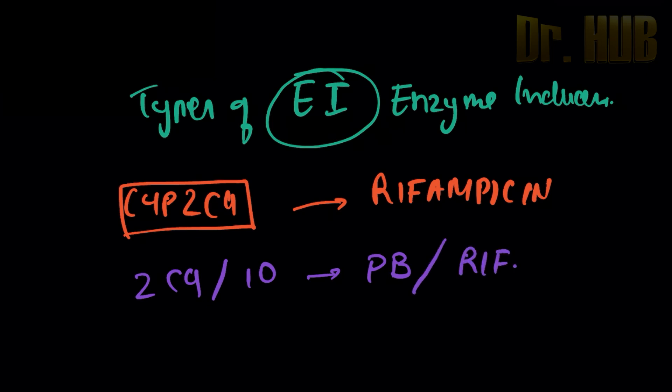Next moving on to the CYP 2C19. So 2C19 is associated with again the rifampin.